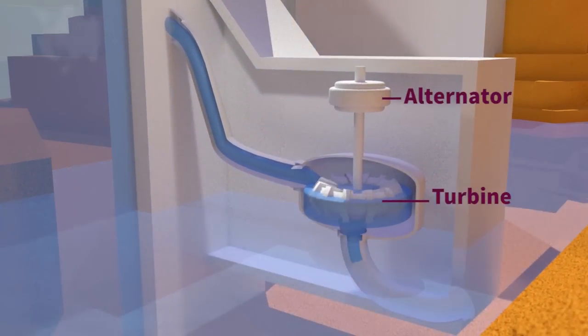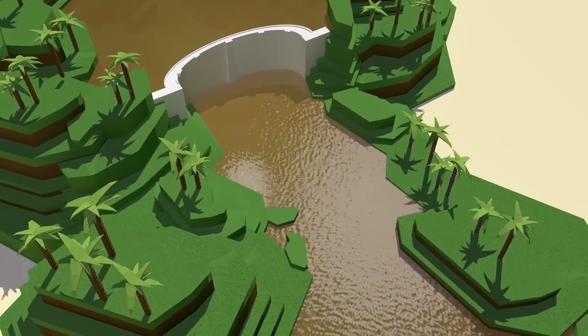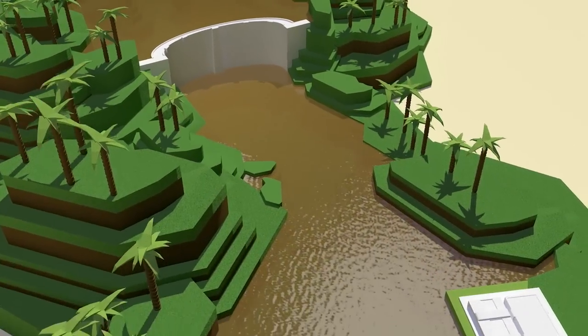Run-of-the-river low-head power plants use the flow of the river to produce electricity continuously.